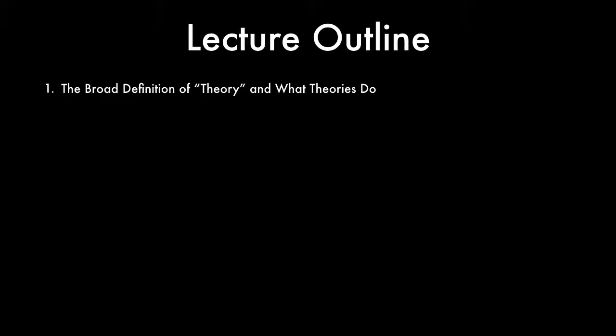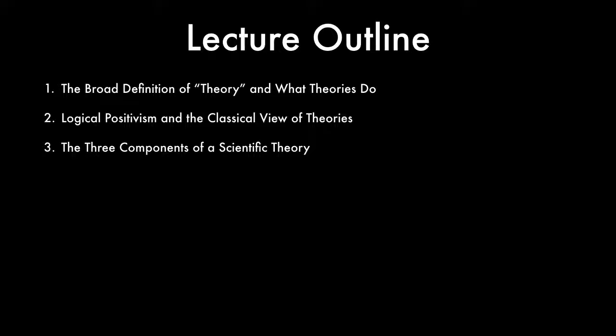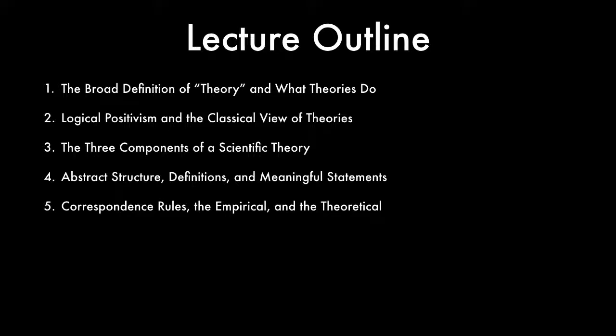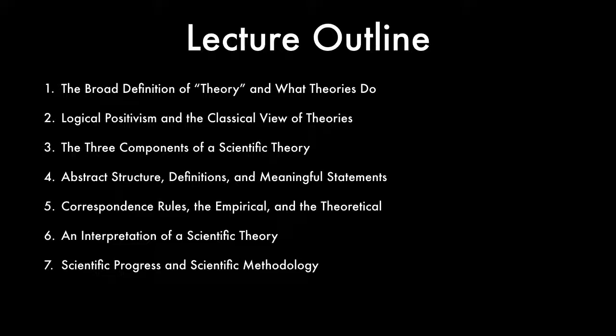In this lecture, we'll discuss eight topics: 1. The broad definition of theory and what theories do. 2. Logical positivism and the classical view of theories. 3. The three components of a scientific theory. 4. Abstract structure, definitions, and meaningful statements. 5. Correspondence rules, the empirical, and the theoretical. 6. An interpretation of a scientific theory. 7. Scientific progress and scientific methodology. 8. Critical analysis of the classical view.